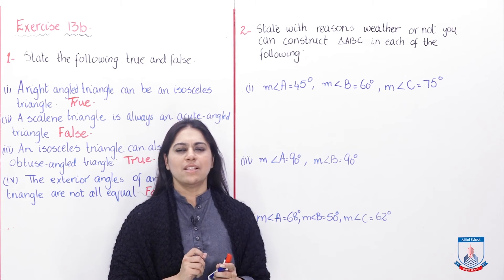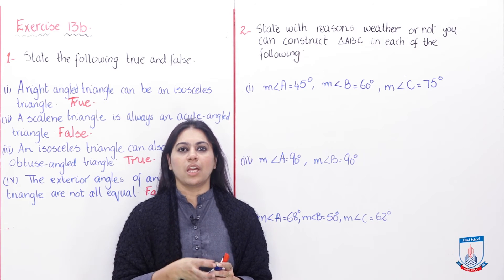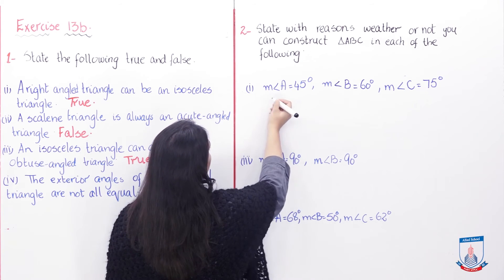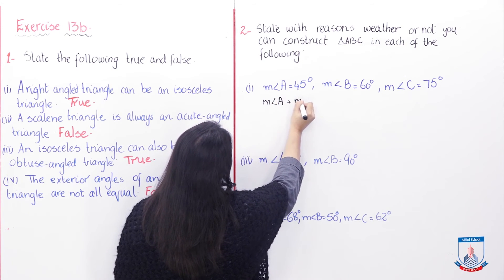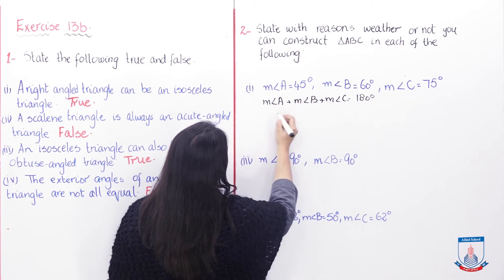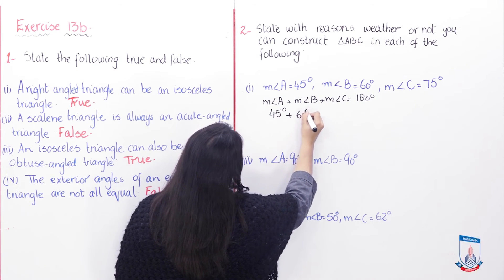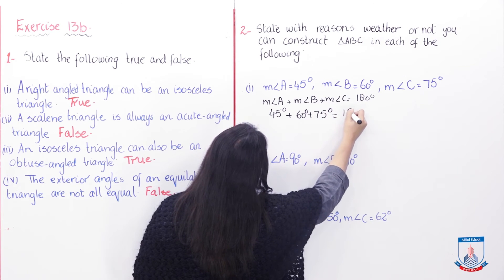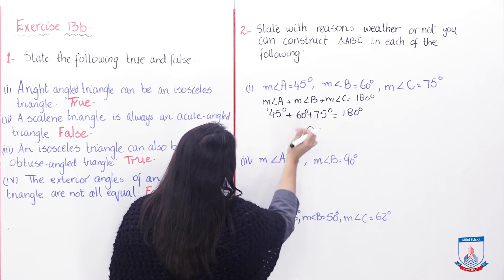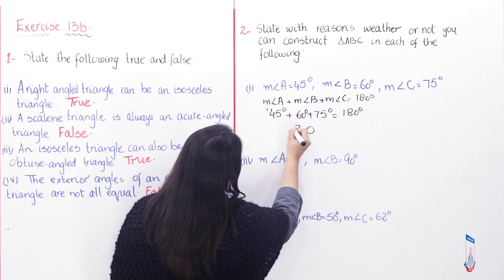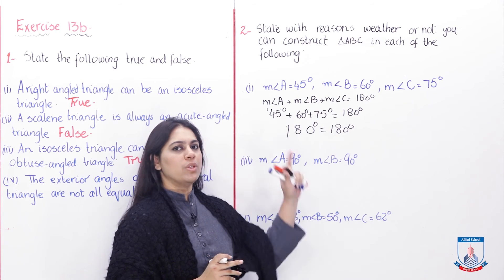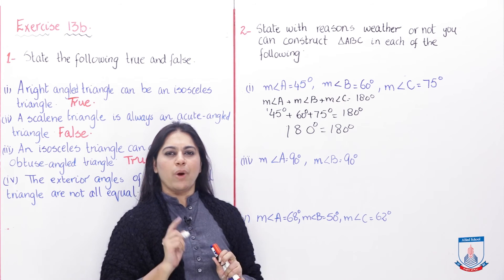Let's check: measure angle A + measure angle B + measure angle C = 180 degrees. Putting in the values: 45 + 60 + 75. Adding them gives 180. So yes, these measurements are correct and you can construct a triangle with these measurements.